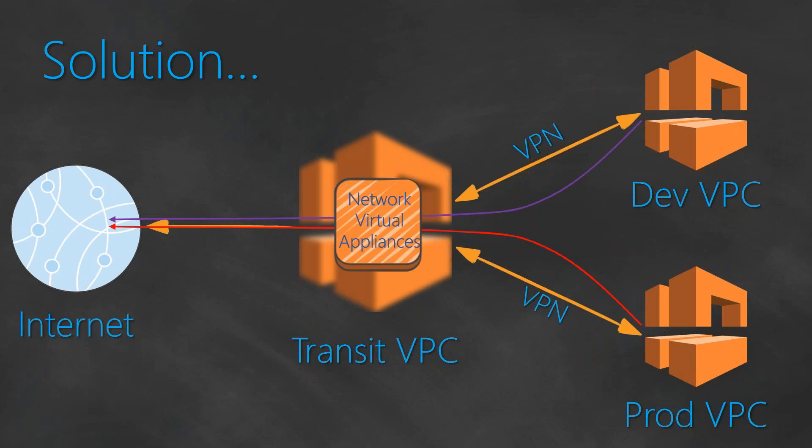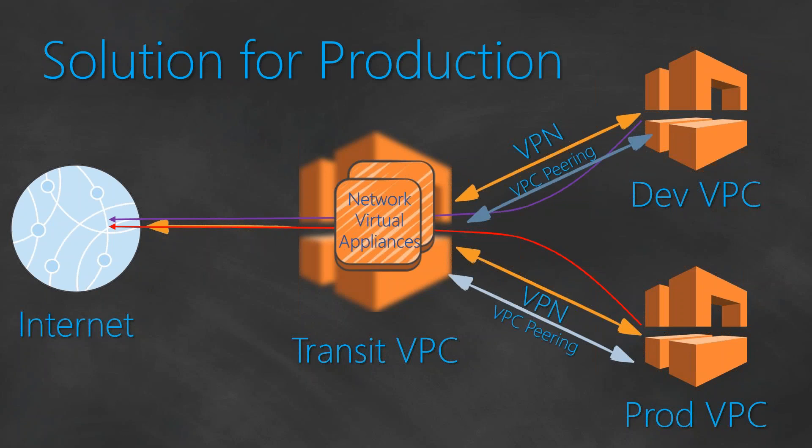When you want to go to production, you will want to have high availability for your virtual appliances. So you will build them into a multi-AZ deployment with more than one instance. You will configure health checks and other things. Apart from health checks and multi-AZ deployment, you will also configure VPC peering so that not all traffic has to go through your VPN. Any traffic that doesn't need to go to the internet can communicate using VPC peering itself.